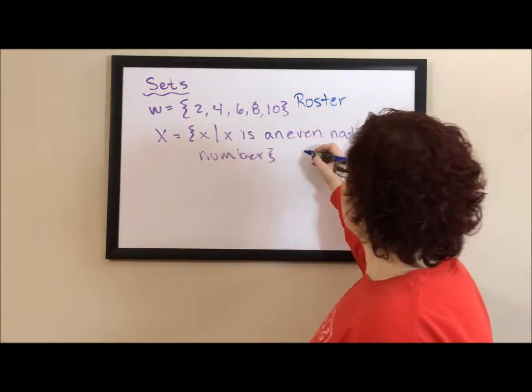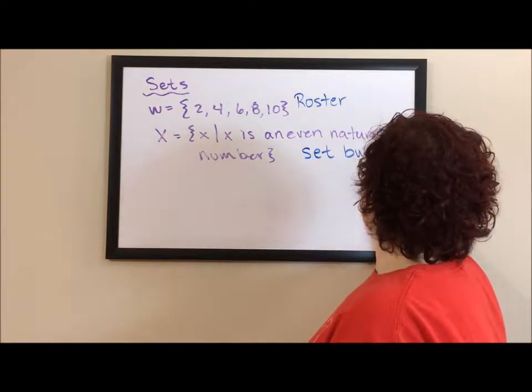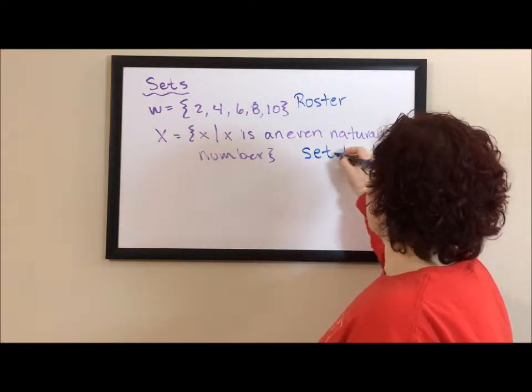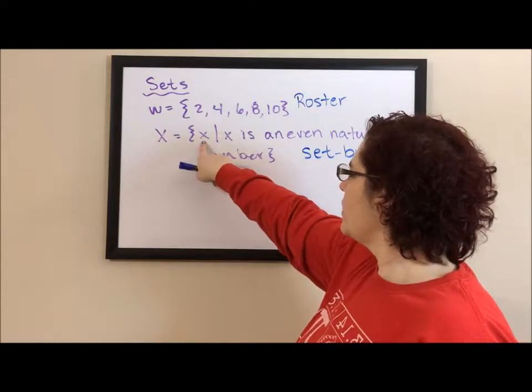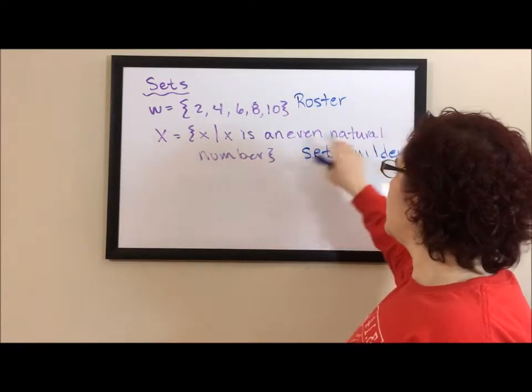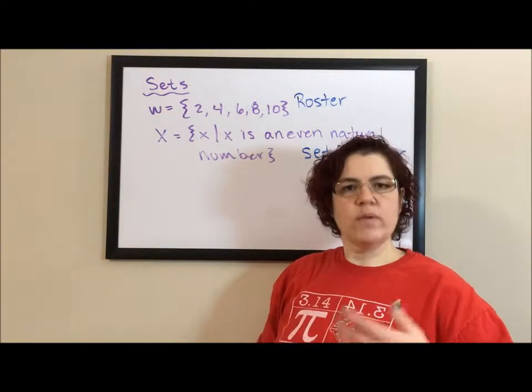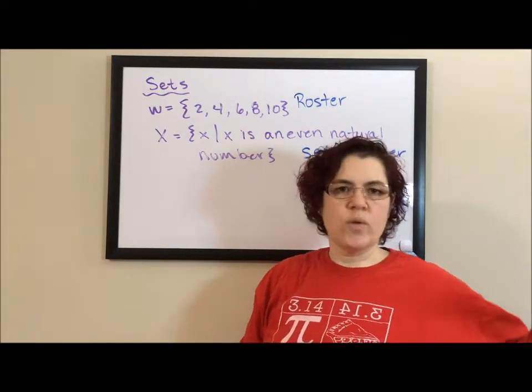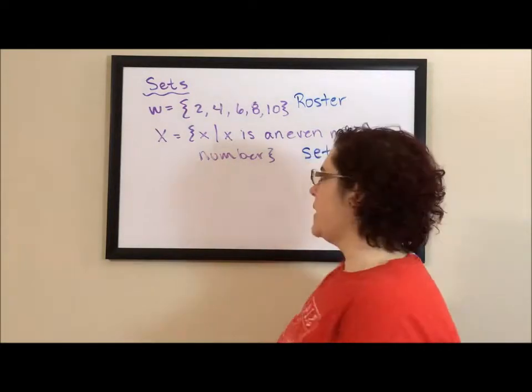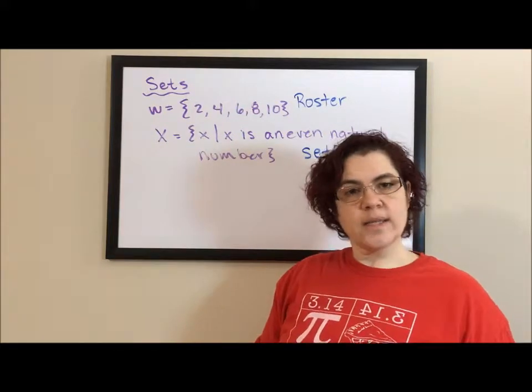This is called set builder. Set builder is building a set. So we're building out the elements by defining them. X is an even natural number. Natural numbers are 1 through infinity. So even natural numbers are 2, 4, 6, 8, 10, 12 going on up through infinity. So now we know the basics of what a set is.